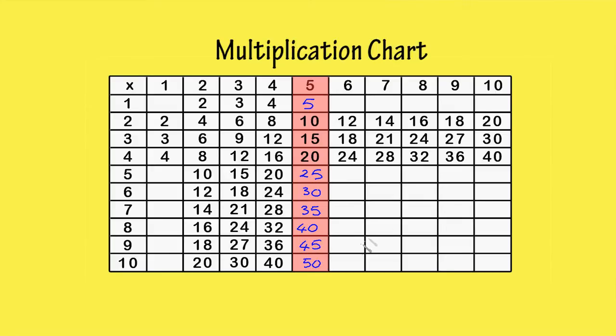We can also complete the 5th row. 1 times 5 is 5. The next 4 boxes are already filled in. As we go on, it keeps getting easier and easier to fill in the chart, because we're repeating information.